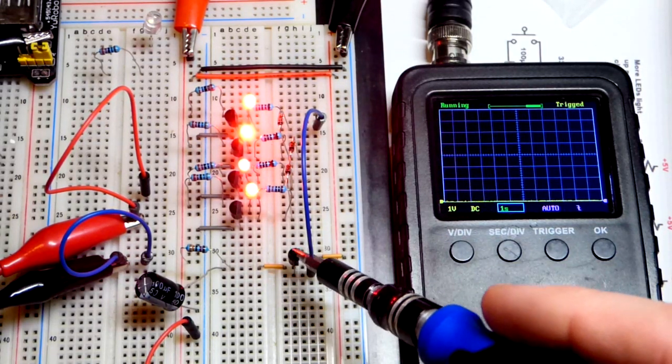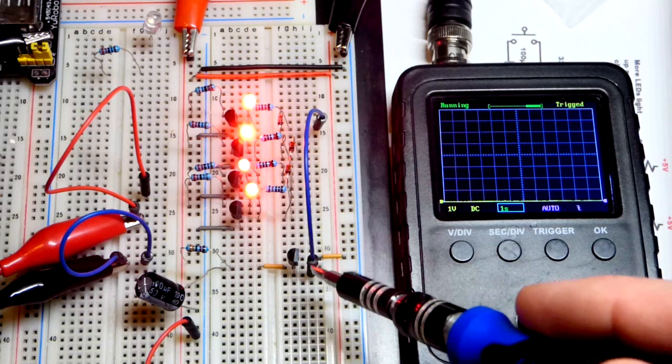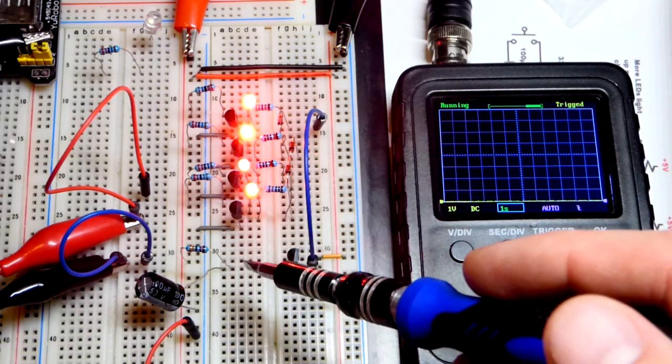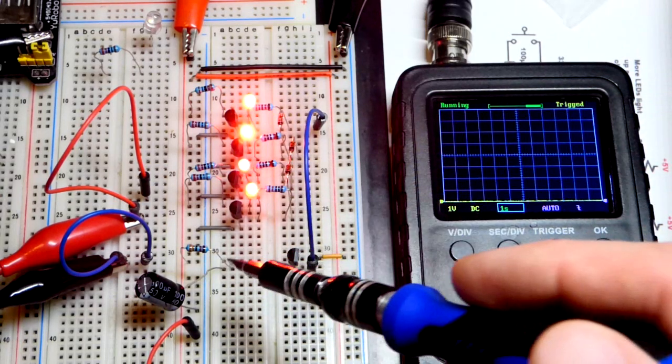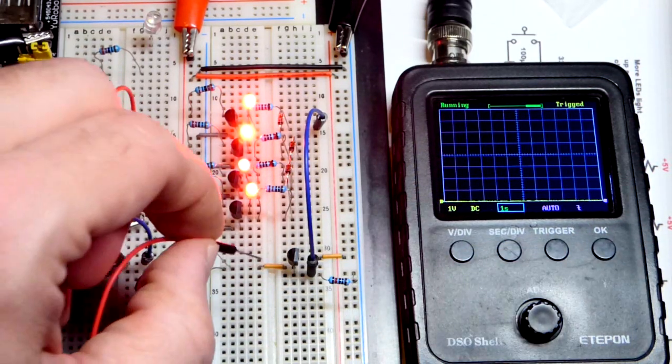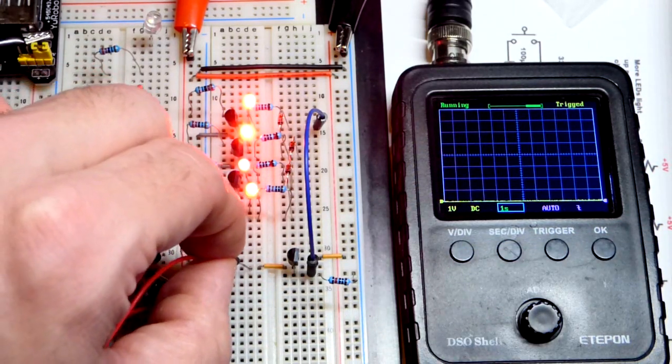We have an NPN bipolar junction transistor here wired as an emitter follower, because the capacitor cannot provide the current needed to get the LEDs to light up. It will drop and we won't get that effect.